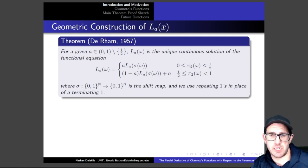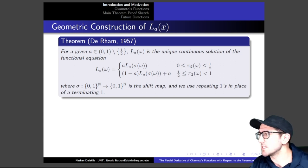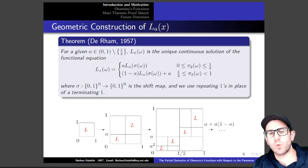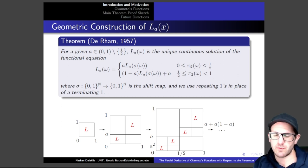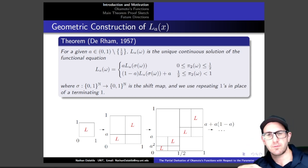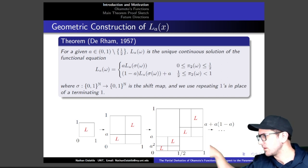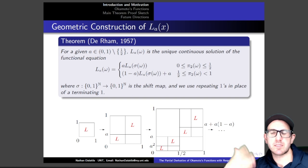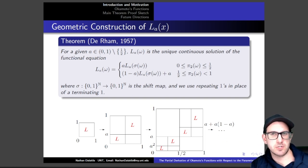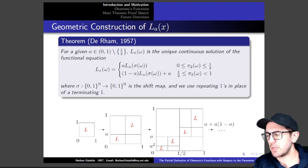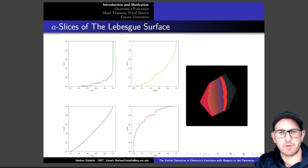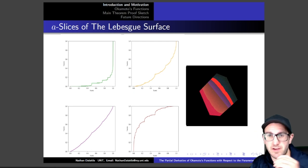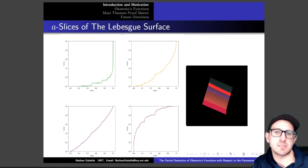The geometric interpretation is that you can generate one of these slices geometrically: start with the unit square, take your parameter value to get A and 1 minus A, then scale the unit square into two rectangles — one scaled vertically by A and one by 1 minus A — and organize them in the unit square. Keep repeating this process forever. The things that stay in the construction at each level are marked with an L, and as we do this infinitely many times and intersect them all down, we get graphs for different parameter values.